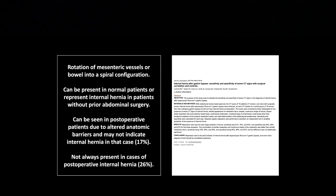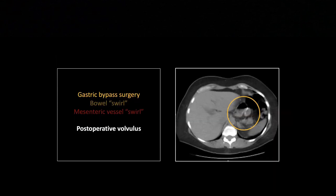The specific definition of the swirl sign is the rotation of mesenteric vessels into a spiral configuration. It can be present in normal patients or represent an internal hernia, even without prior abdominal surgery. You can see it in postoperative patients due to altered anatomic variables, and it may not always indicate an internal hernia, nor is it always present in cases of postoperative internal hernia. However, it is a fairly good indicator — the authors consider the mesenteric swirl to be the best indicator of an internal hernia. It's worth tuning your eye to.